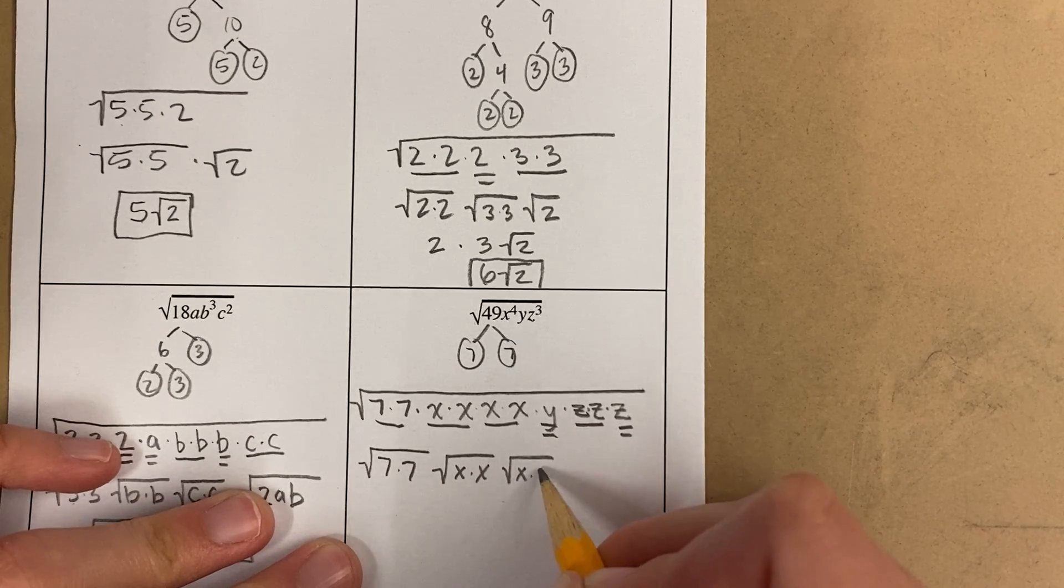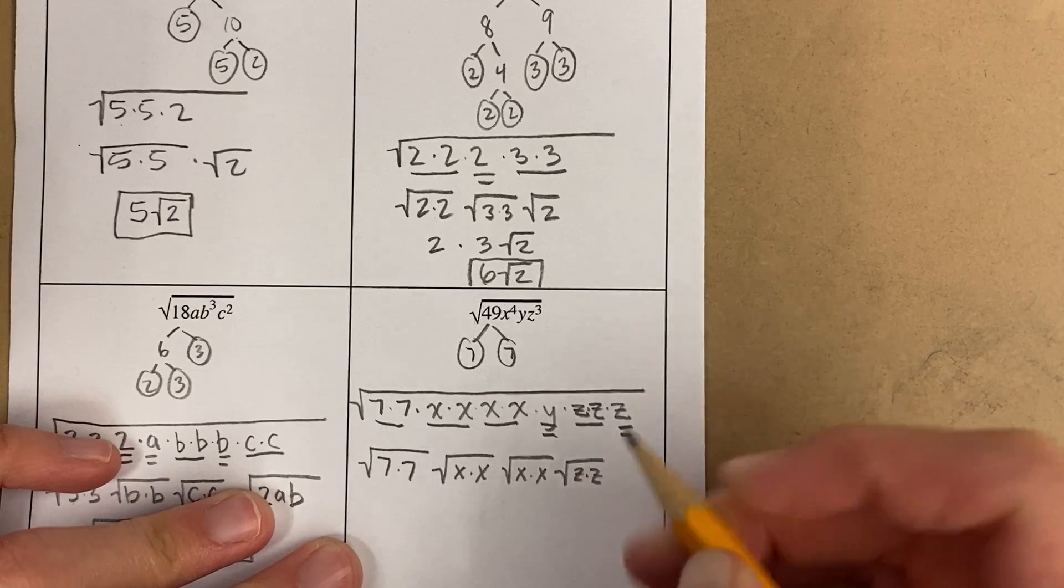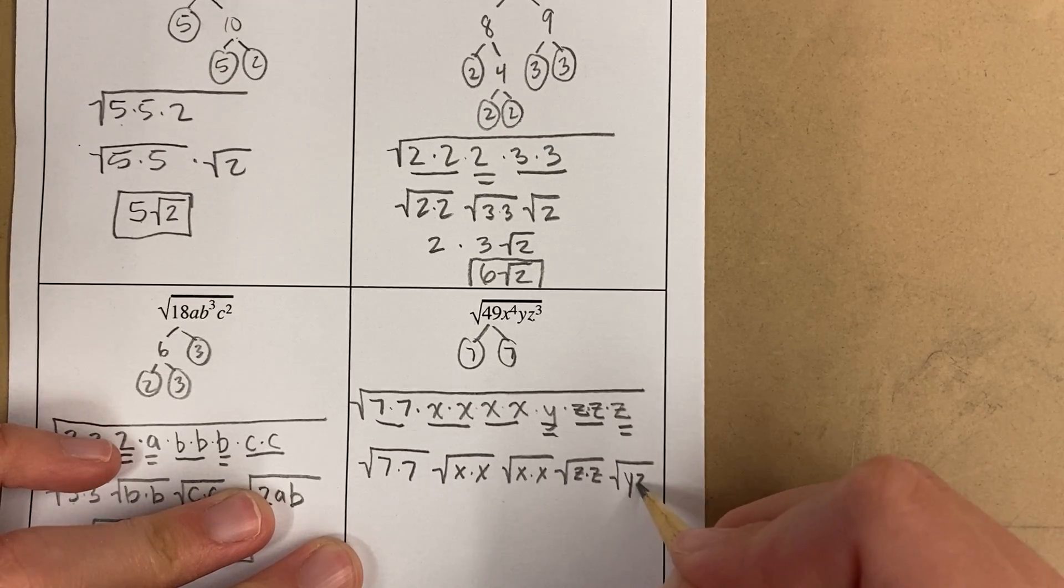Are you past the point where you need to write this out? I don't know. Are you? If you are, okay. But if you're not, then write it all out. Okay, there's a single y and a single z.